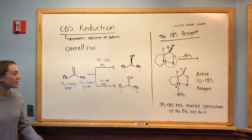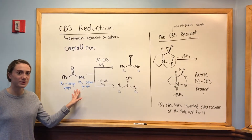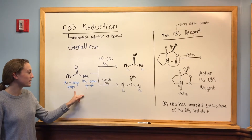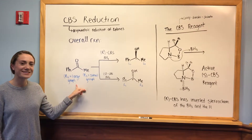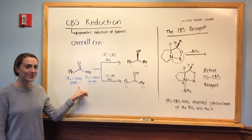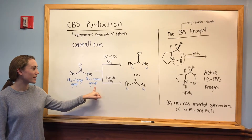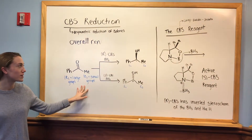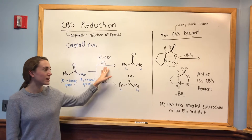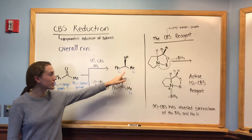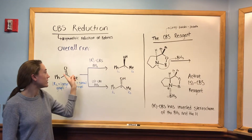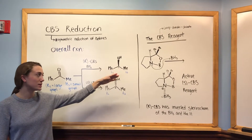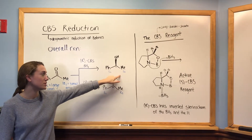If we take a look at the overall reaction, we can start with this pretty simple ketone that has one group on either side of it. One of the groups is going to be this large group represented by the phenyl, and over here we have a methyl representing the small group. If we treat this molecule with CBS, we get this molecule over here with a new stereocenter, and the carbonyl has been reduced to an alcohol that's coming towards us in relation to these two groups.